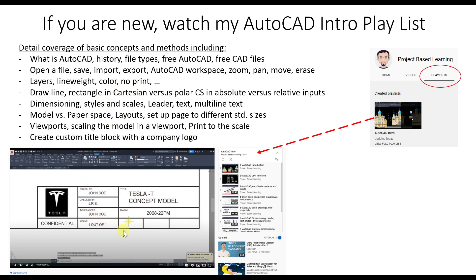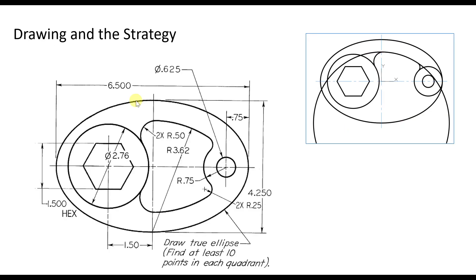Towards the end, I hope to prepare a title block and border — how to make a printout with a standard scale. For this particular tutorial, we're going to draw this object.